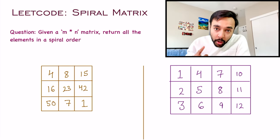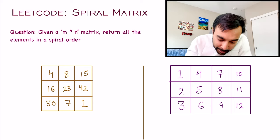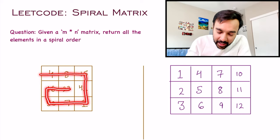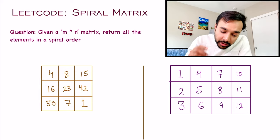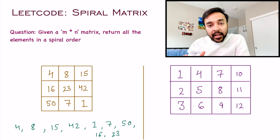Given our matrix in test case number 1, a spiral order will look something like: 4, 8, 15, 42, 1, 7, 50, 16, and then 23. All of the elements should appear in this order.